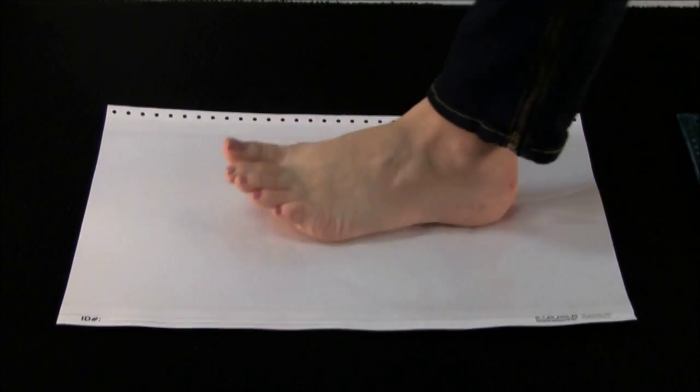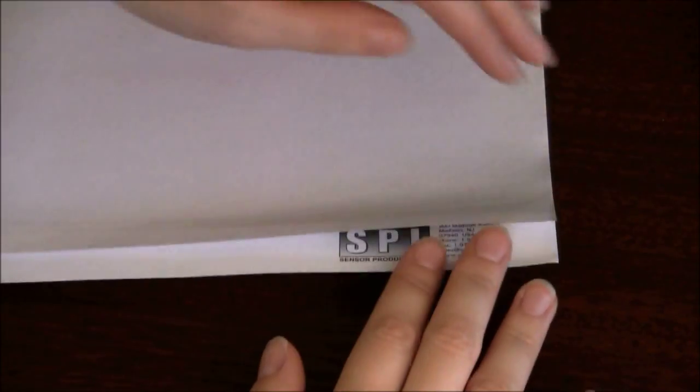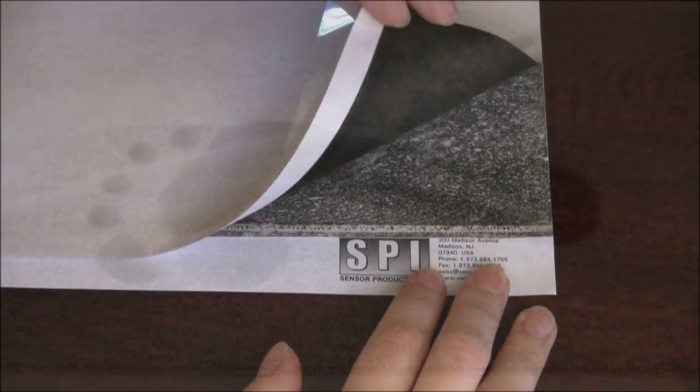In this example, PressureX Micro is used to record a foot impression. After walking across the film, a grayscale pressure distribution profile is captured.